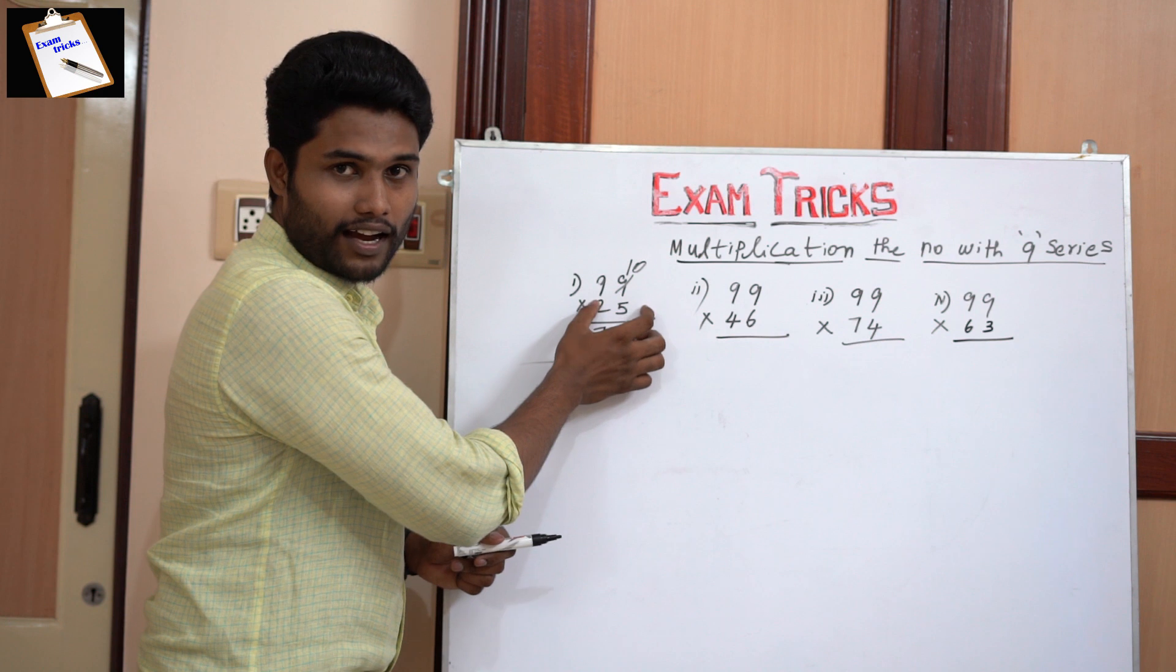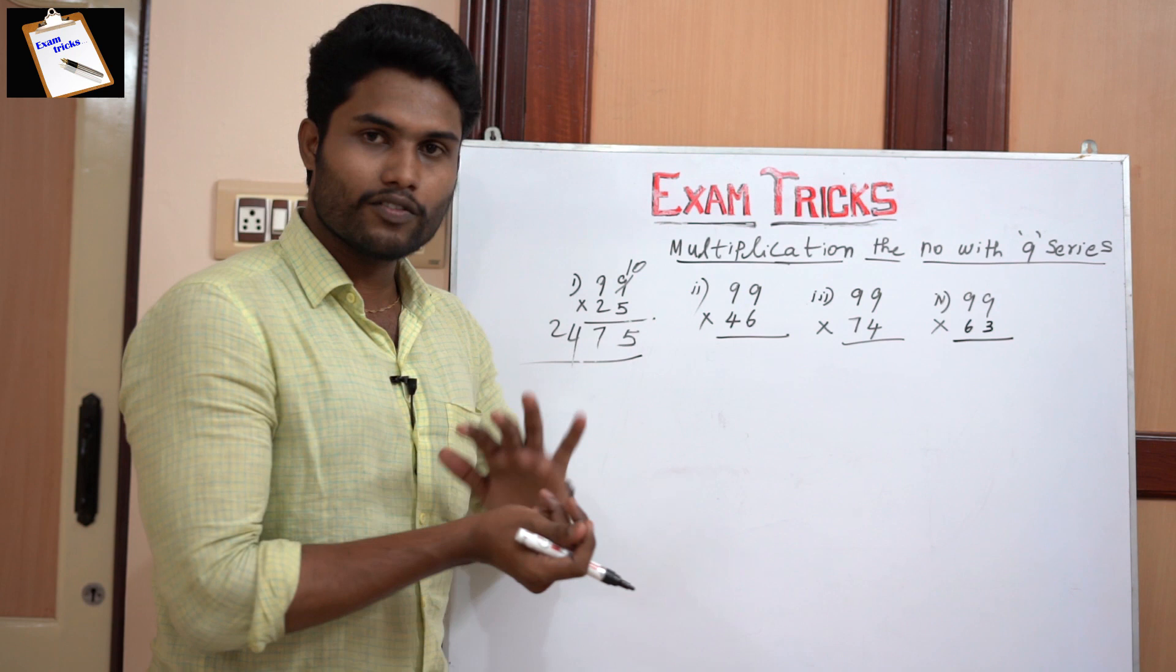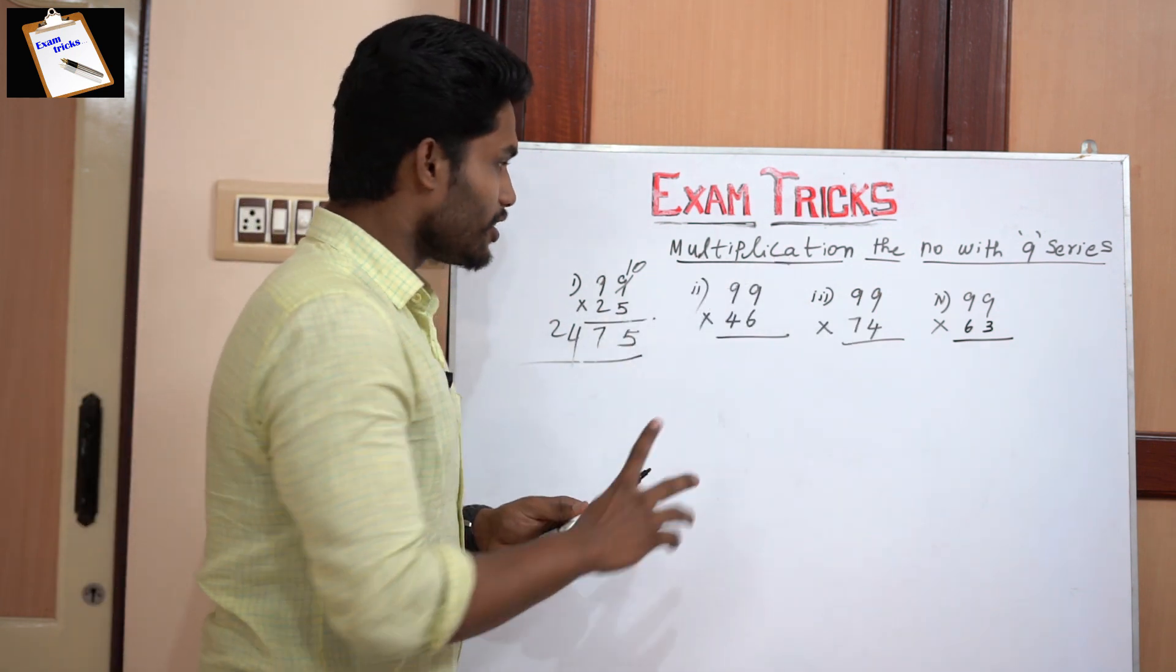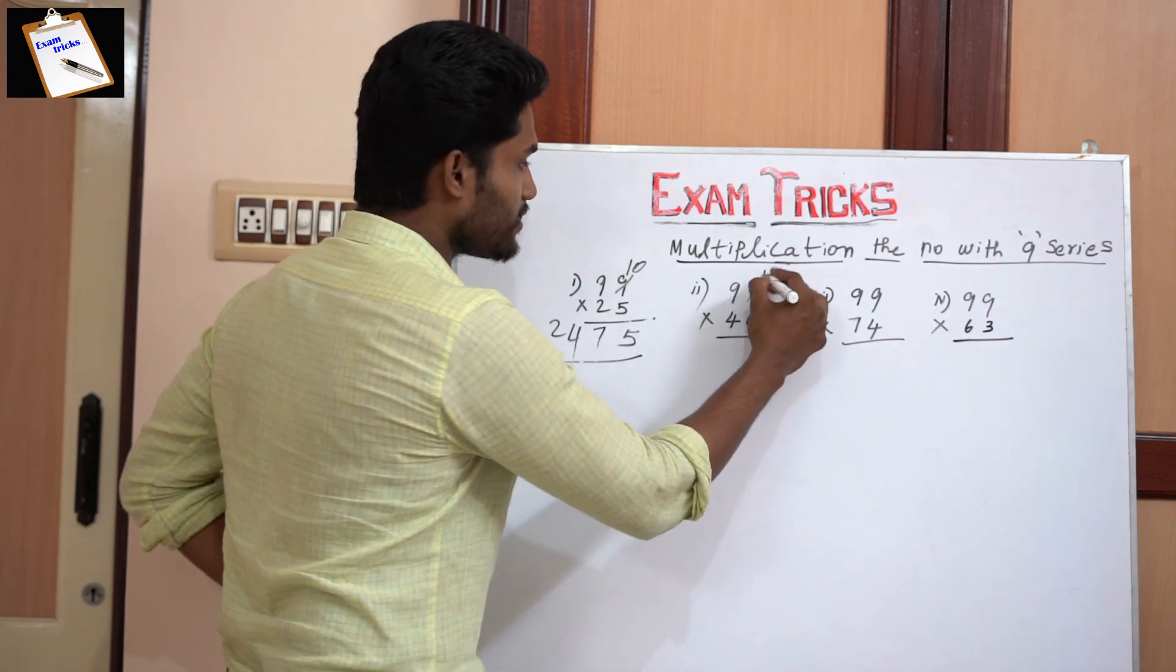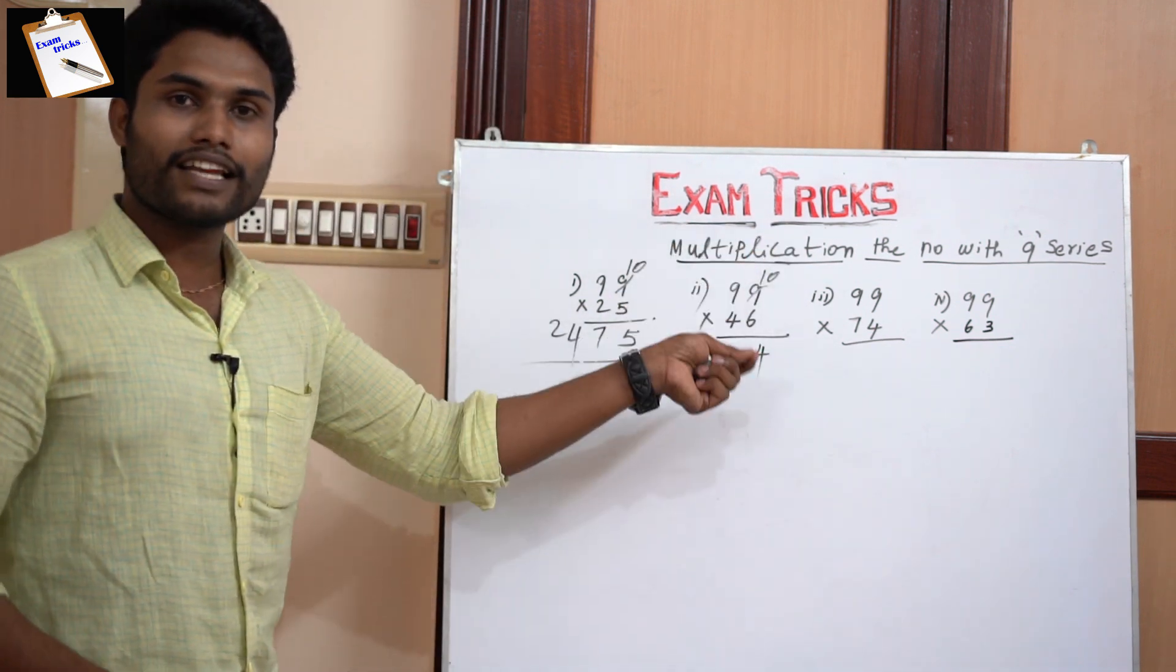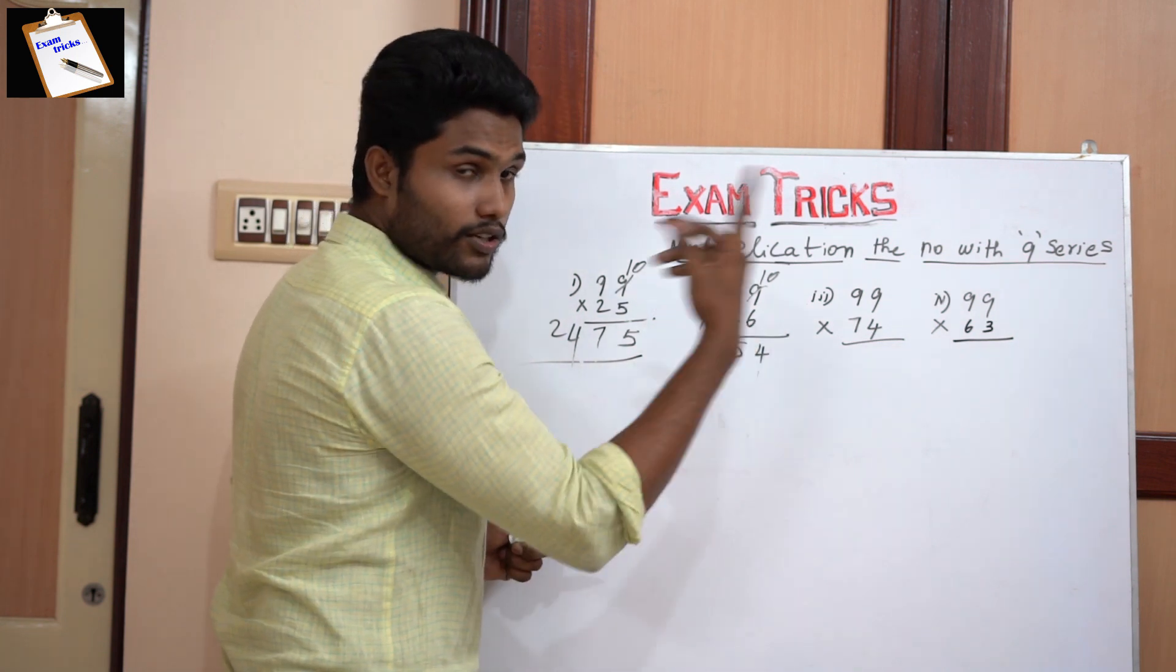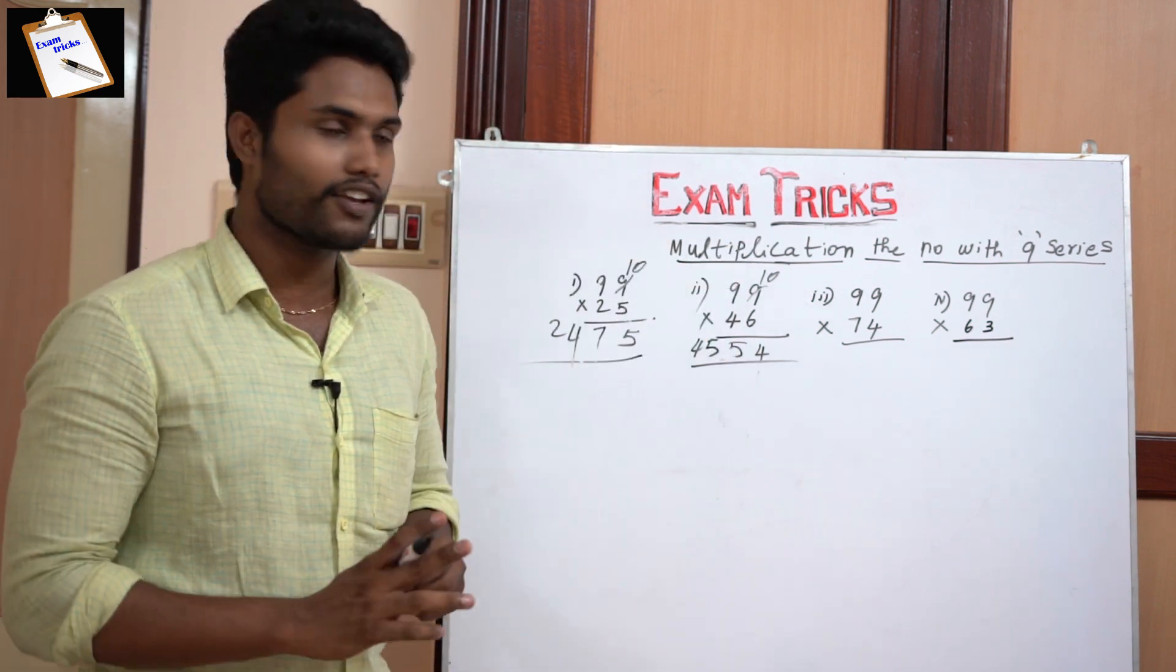It is very easy, so we'll see one more number. 99 into 46. What is the first step, students? Change the number 9 as 10. The 9 becomes 10, then what is the difference? 10 minus 6 is 4, then 9 minus 4 is 5. What is 46? You just write the number 45. So the answer is 4554.